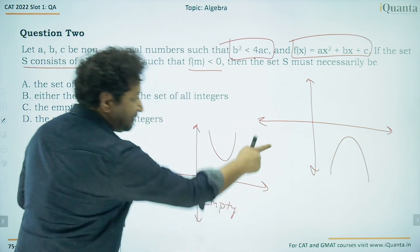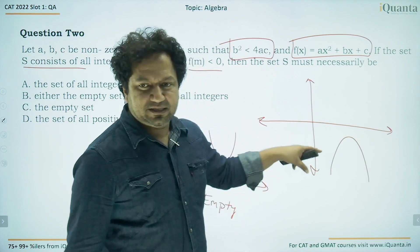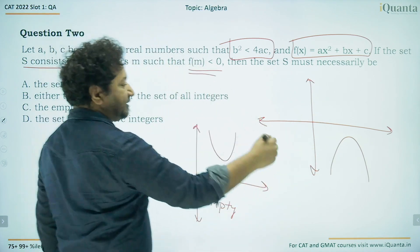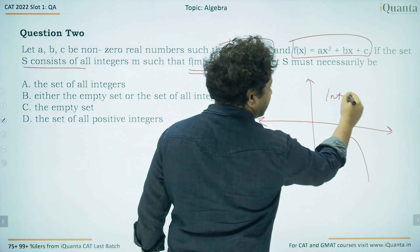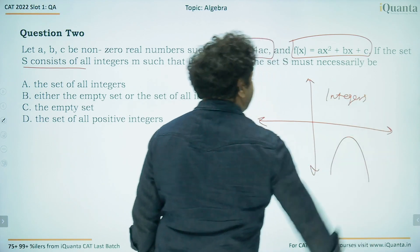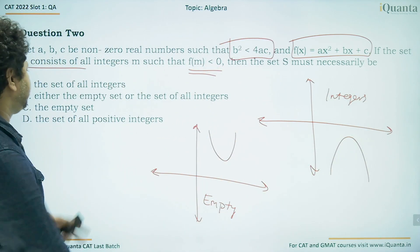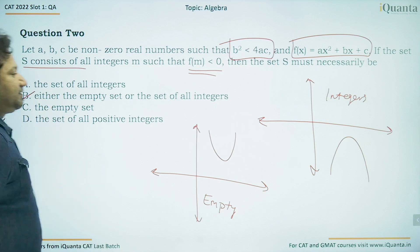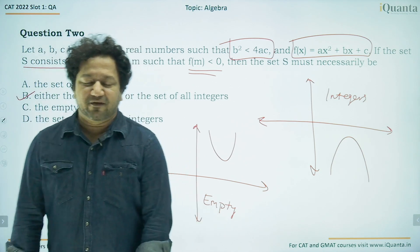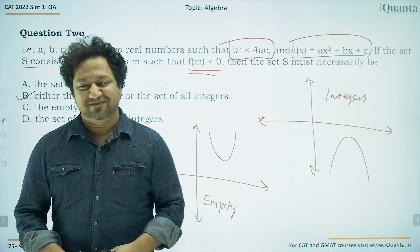In the second case, the parabola can be downward-facing. Here everything is negative, so f(m) < 0 is possible for all integers. So we have two cases: one gives an empty set and the other gives all integers, which matches option B. This is how we can solve this question just by drawing the graph, without doing much algebra.